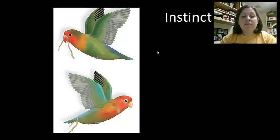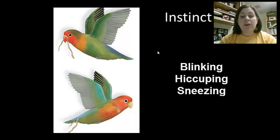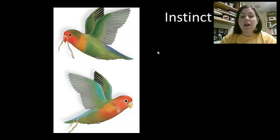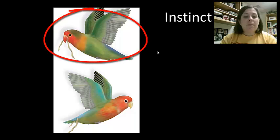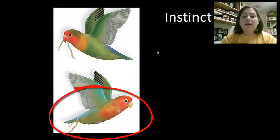Other innate behaviors include reflexes, which are rapid involuntary responses to a stimulus that remain through the lifetime of the individual. Examples of reflexes include blinking, hiccuping, and sneezing. Instincts are similar to reflexes but more valuable in helping adapt to surroundings. Some examples of instincts are seen in how different species of lovebirds build their nests. One species carries long strips of leaves to be woven into the nest, while another carries short strips in its tail feathers so it can carry more than one strip at a time.